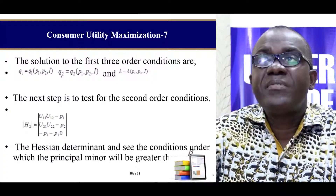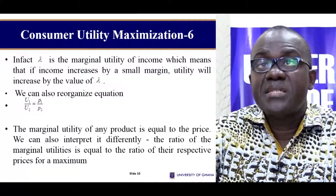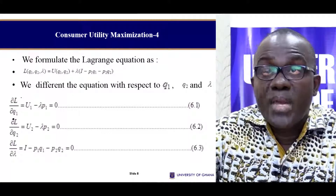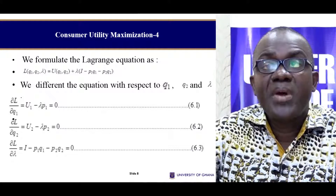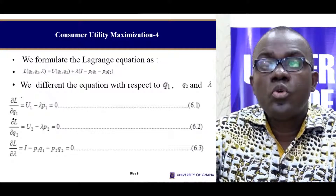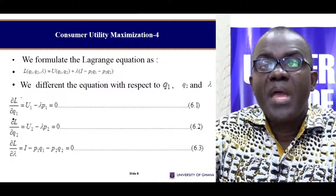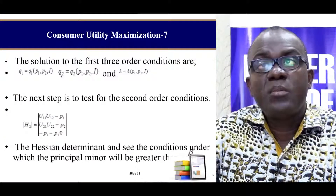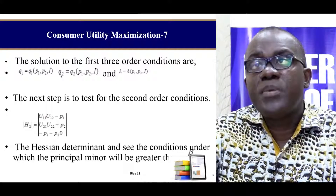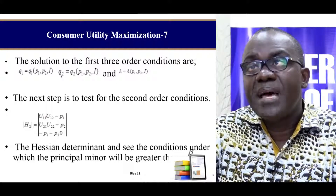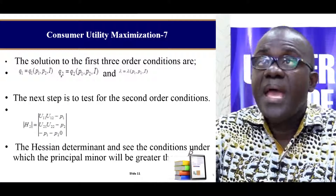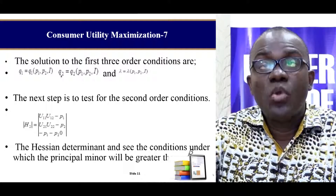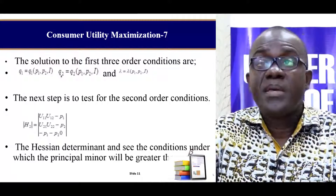Once we have these functions, notice that we can always solve for Q1 and Q2. Q1 and Q2 will be in terms of P1, P2, and income. So if we assume this is the solution, Q1 will depend on P1, P2, and income, and Q2 will also depend on P1, P2, and income. Lambda will also be in terms of the same variables. This gives us the demand that will maximize our utility given the problem at hand.